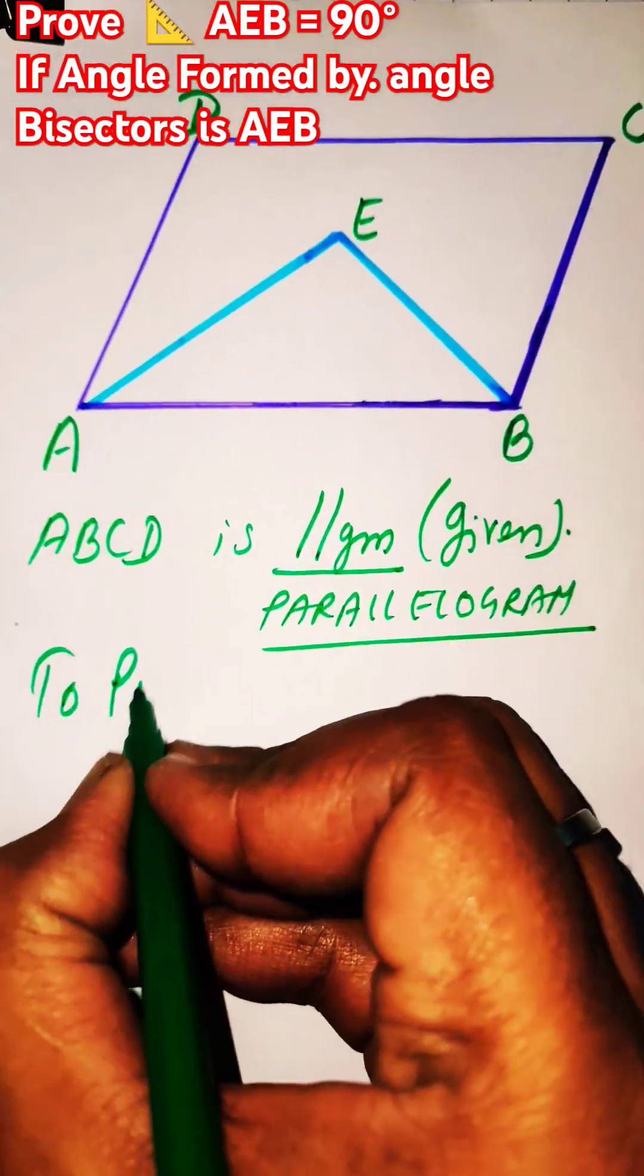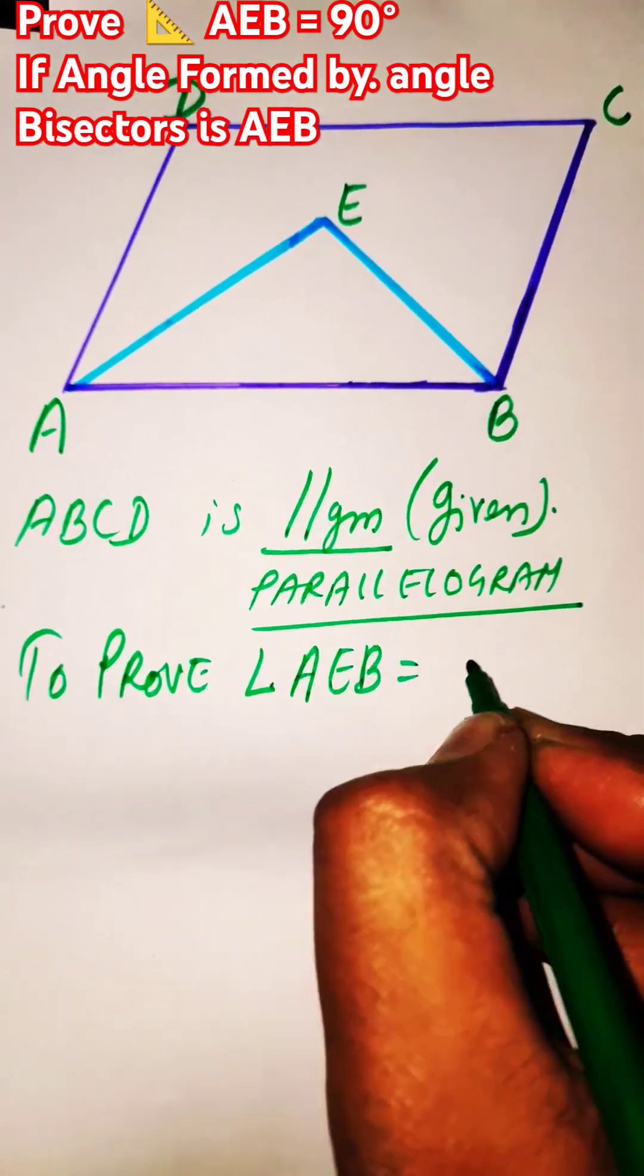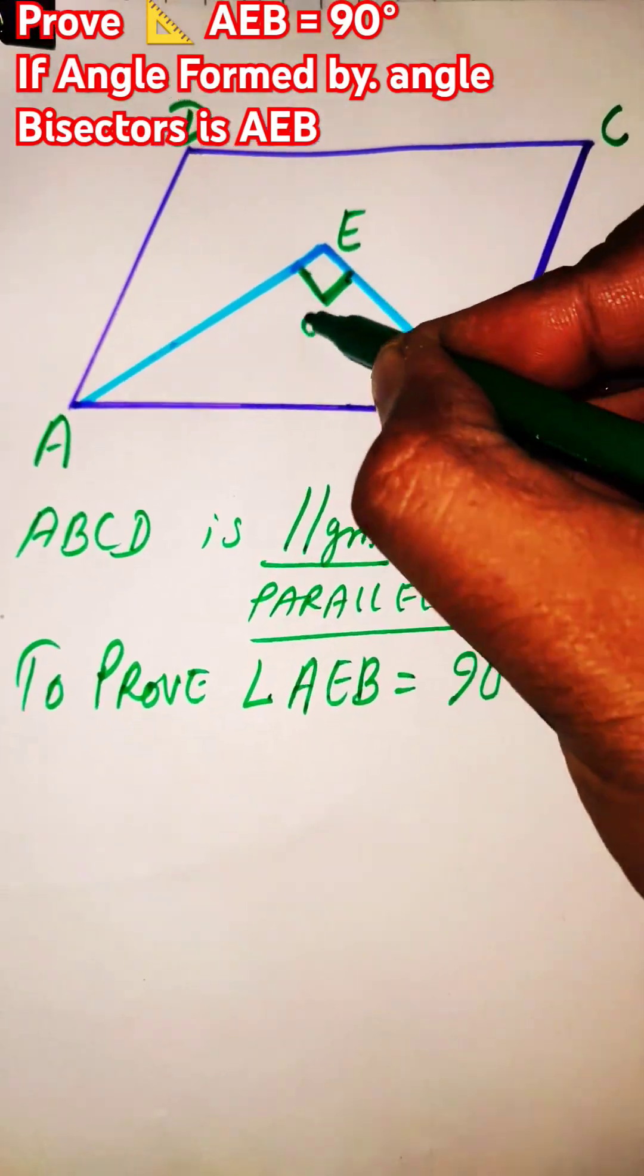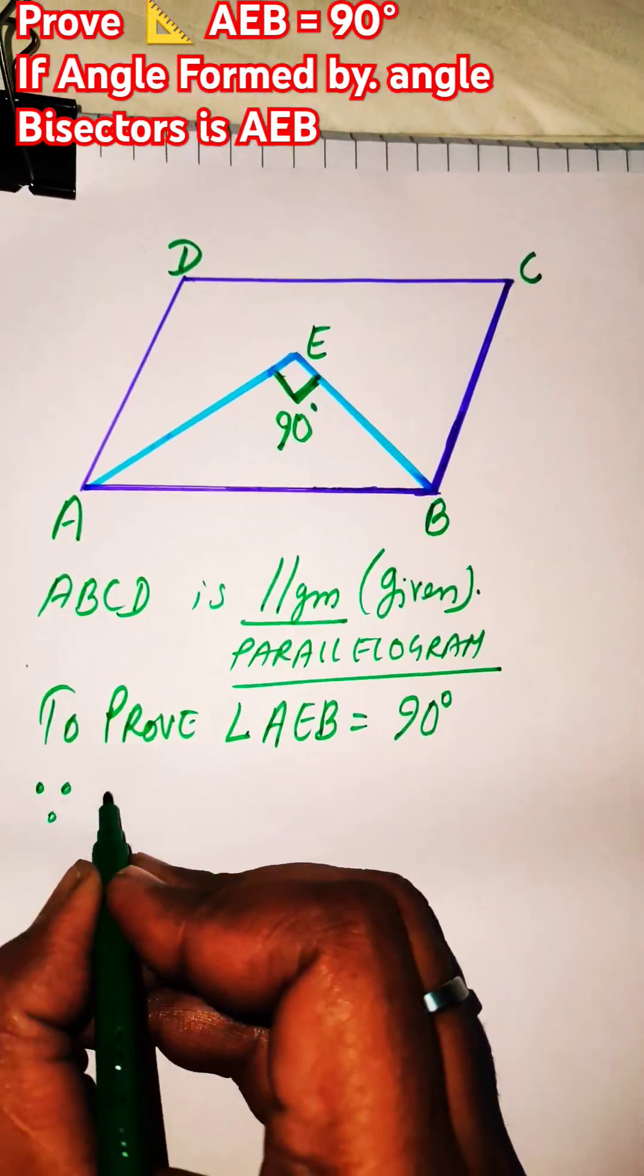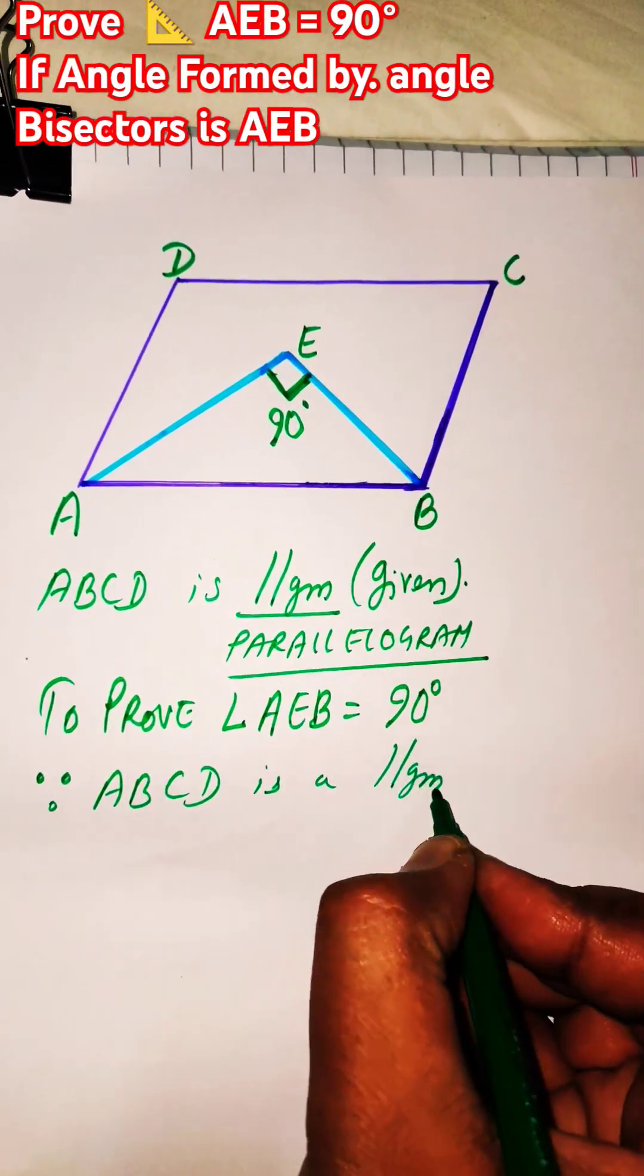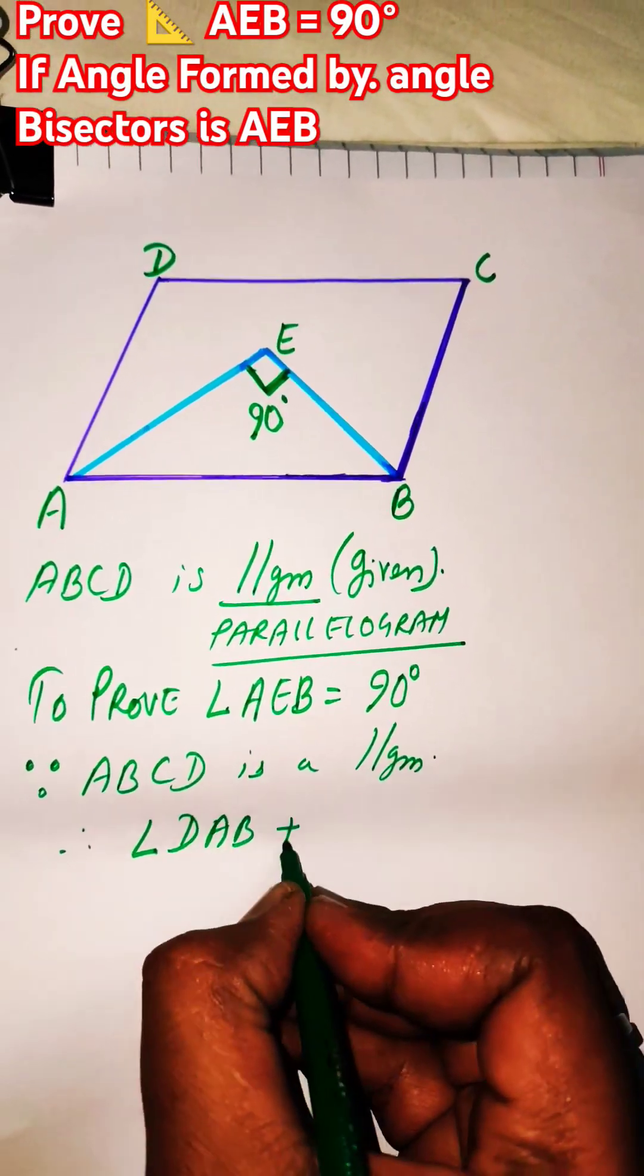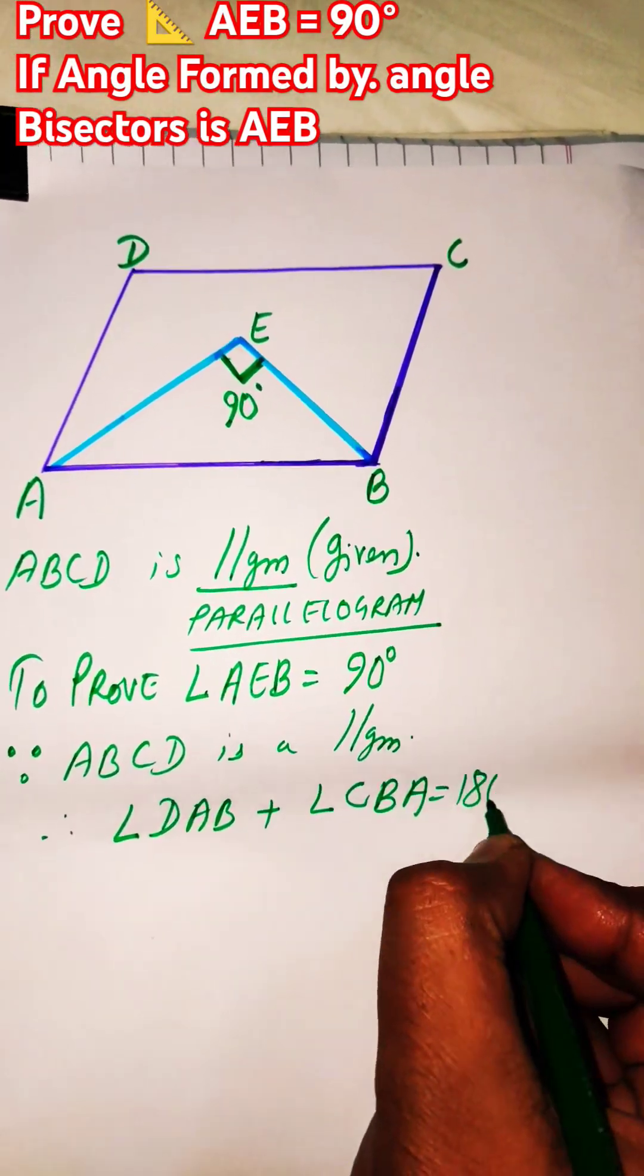Here the two adjacent angles, let's say A and B. Then AE and BE are the angle bisectors which meet at E. So we need to prove that angle AEB is 90 degrees, that is a right angle.